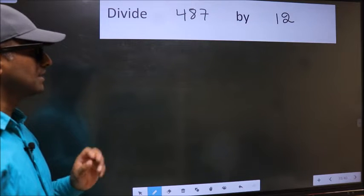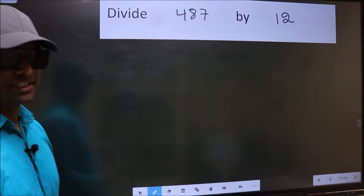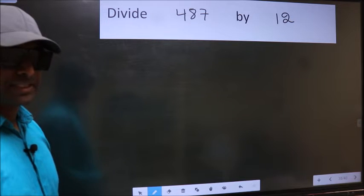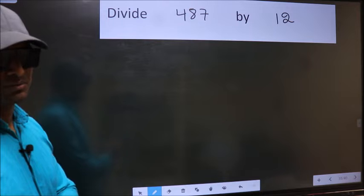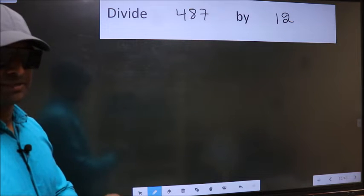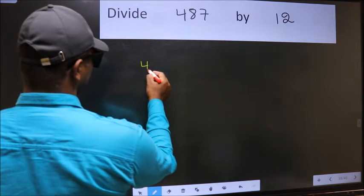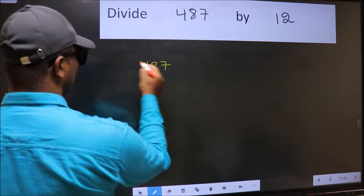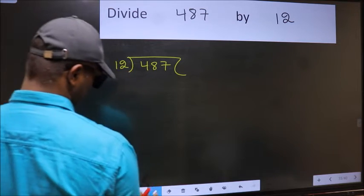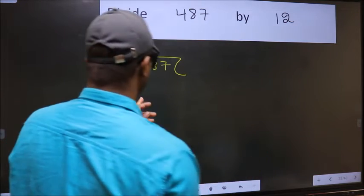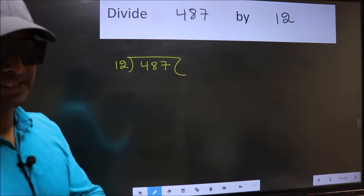Divide 487 by 12. While doing this division, many people make a mistake — I will let you know what that mistake is. But before that, we should frame it in this way: 487 divided by 12. This is your step 1.